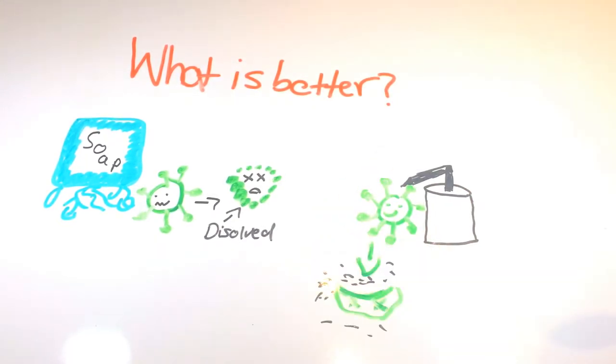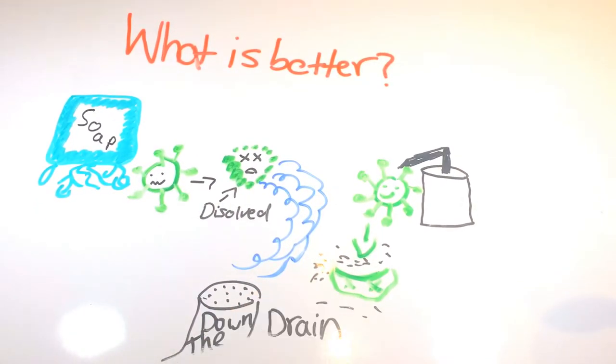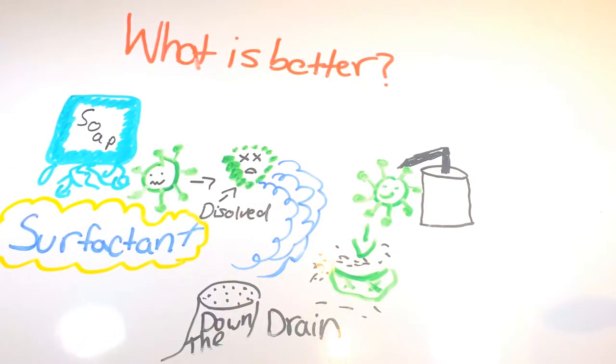Soap is also a surfactant, which in a nutshell means that it reduces the surface tension on your hands, ultimately removing even the stickiest bacteria.